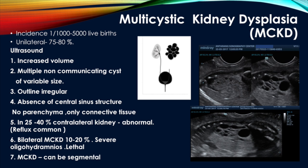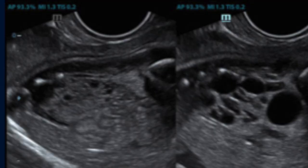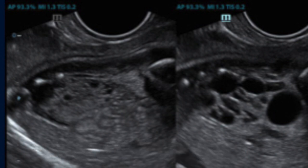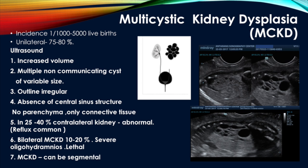For formation of nephrons there should be stimulus from the ureteric bud; if the ureteric bud is not formed, the metanephric vesicles convert into multiple cysts of various sizes — this is multicystic kidney dysplasia (MCKD). It is usually a unilateral condition. On ultrasound: increased kidney volume, multiple non-communicating cysts of variable sizes, irregular outline, and absence of central sinus structures — only connective tissue is seen, no parenchyma. In 25 to 40% of cases the contralateral kidney can also be abnormal; the commonest abnormality is reflux, since the pathology originates from the abnormal ureteric bud. Bilateral MCKD is rare and because urine is not produced, severe oligohydramnios results, making it a lethal condition.